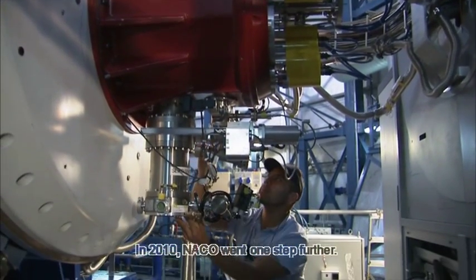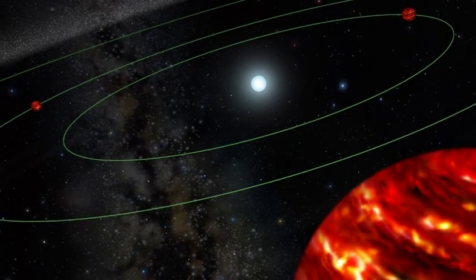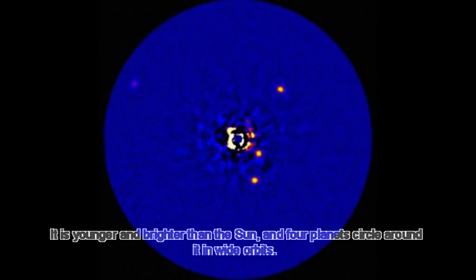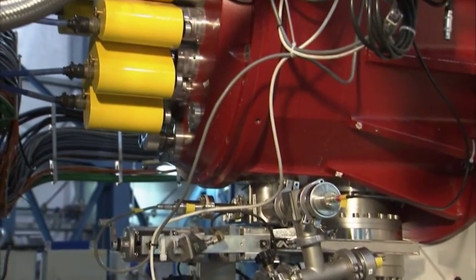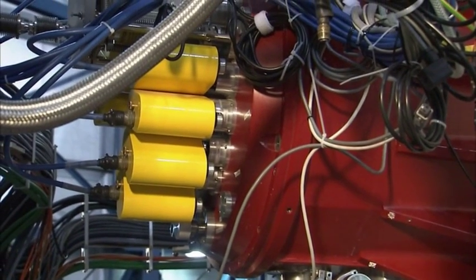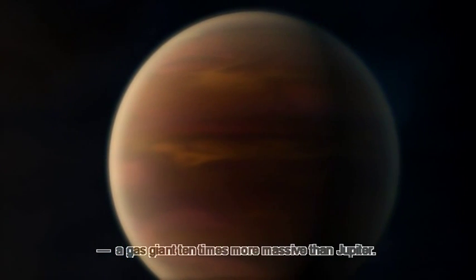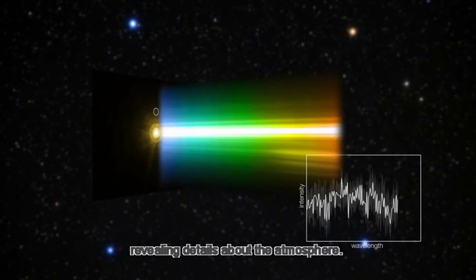In 2010, NACO went one step further. This star is 130 light-years away from Earth. It is younger and brighter than the Sun, and four planets circle around it in wide orbits. NACO's eagle-eyed vision made it possible to measure the light of Planet C, a gas giant ten times more massive than Jupiter. Despite the glare of the parent star, the feeble light of the planet could be stretched out into a spectrum, revealing details about the atmosphere.